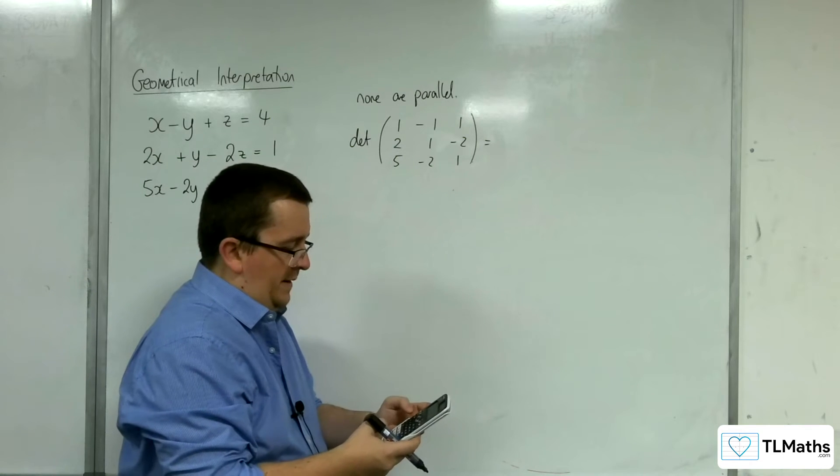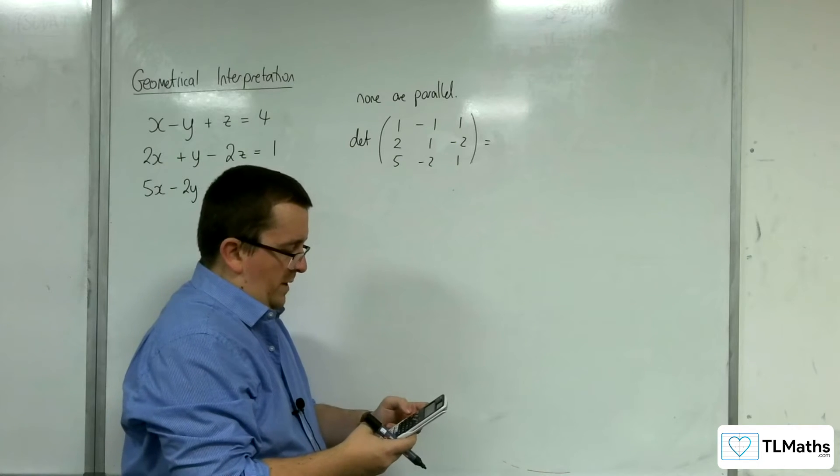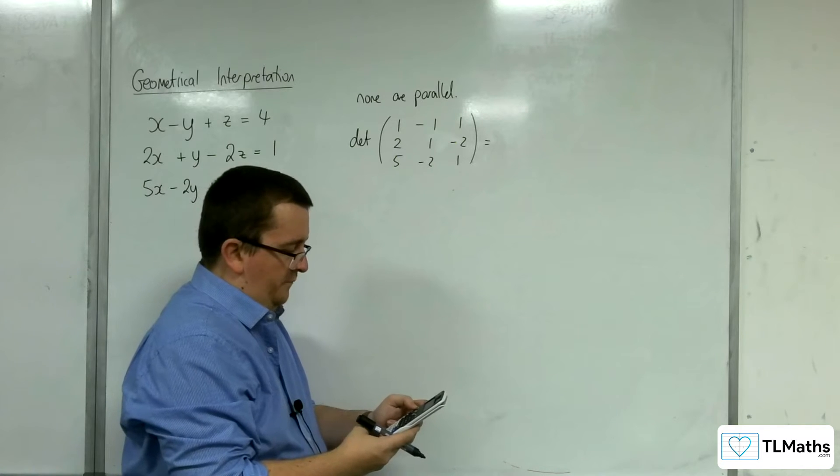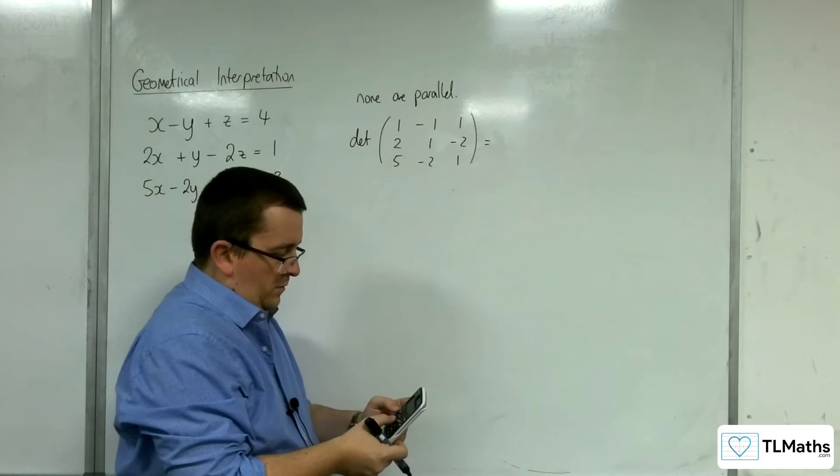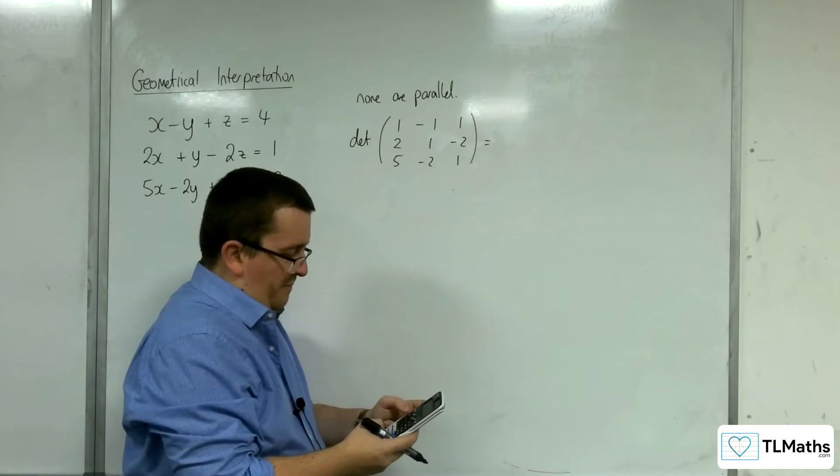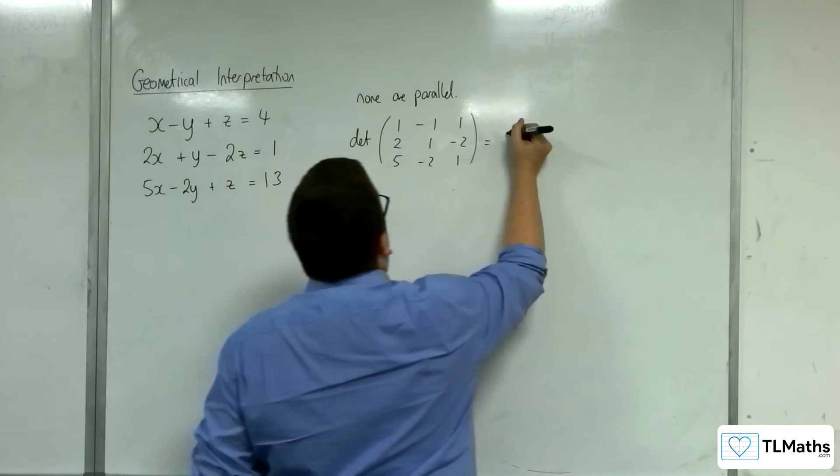So matrix calculation. And let's go and do... Where are we going? So option matrix A. Where am I going? Oh, there we are. So determinant of matrix A. Sorry, I'd forgotten where it was. There we are.